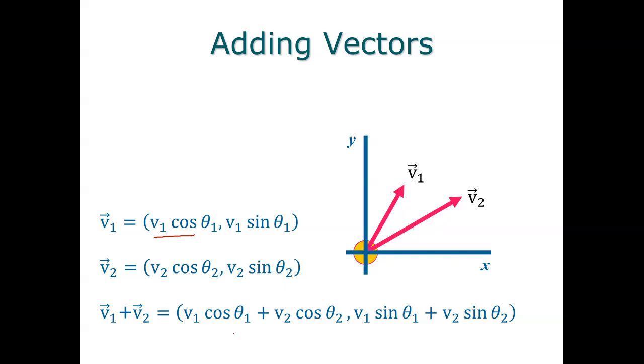So if we add them together, then we just add them, right? So v1 cosine of theta 1 plus v2 cosine theta 2. So really, this is just a fancy way of saying we find our x components, then we add them together, then we find our y components, and then we add them together.